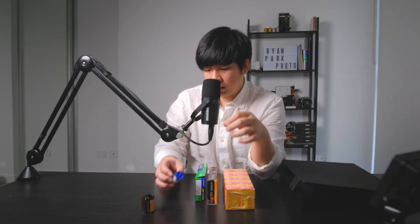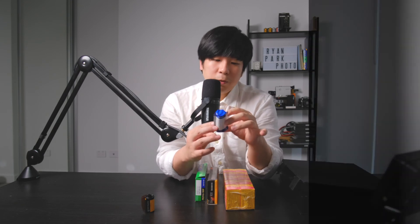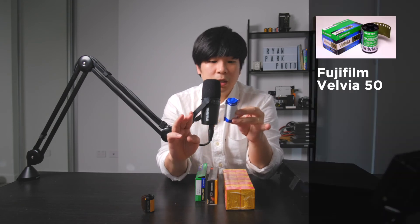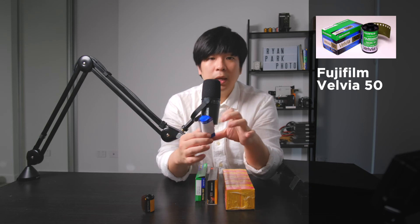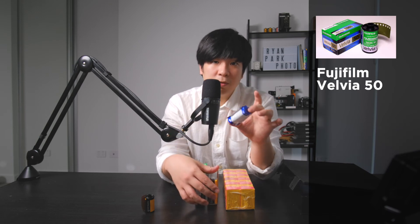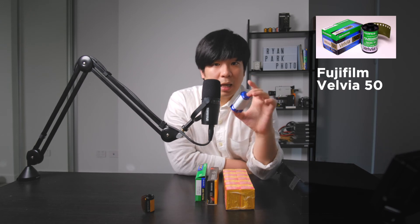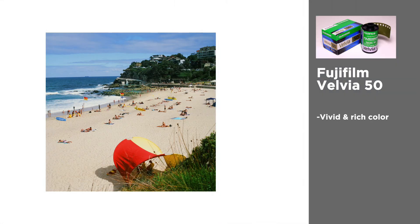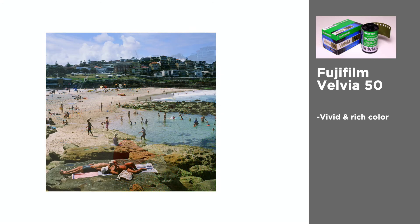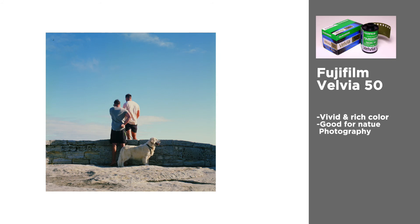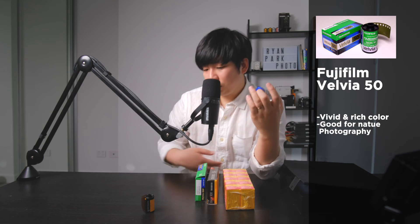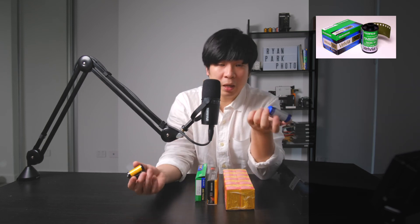My next film is the Fujifilm Velvia 50. It comes in 50 or 100 but I've been using 50 all the time — I think this is my most favorite film for landscape. This is an ISO 50 slide film, so it's quite slow. It produces the most vivid and rich color in film, I think. To be honest, it exaggerates colors to make them pop out of the photos. I love to use this in nature photography like rainforest, mountain, and coastal areas rather than city. For city, I prefer Portra for its warmer tone, at least in Sydney.